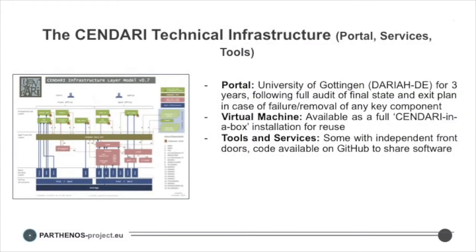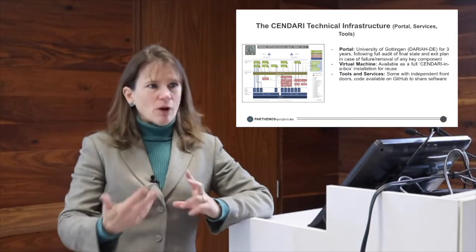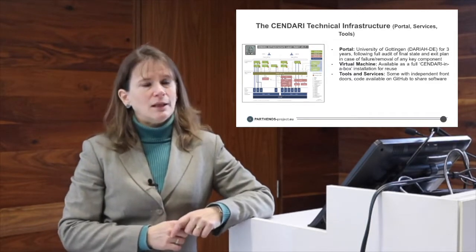Each of these asset classes had its own sustainability planning under the larger strategy. For example, with the portal, we decided to look at a three-to-five year window, and our partner DARIAH agreed to sustain the portal for that period in its complete form. This was really important because it not only allowed us to say this will be there for a period of time, but it also forced us to think about what happens if something goes wrong — because when you're not in a period of active development, you have to look at technical sustainability slightly differently.